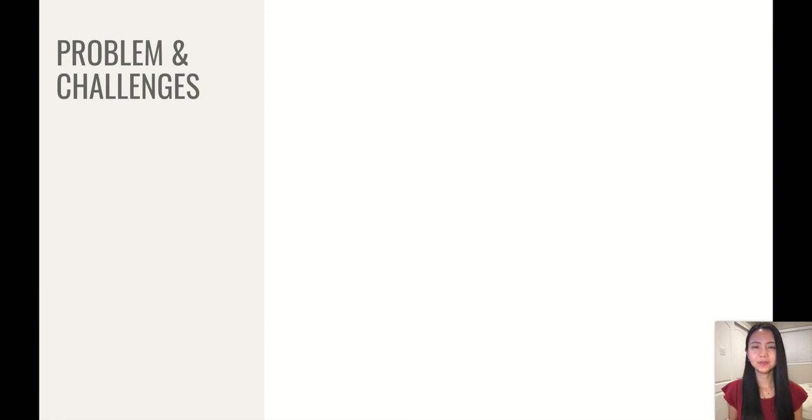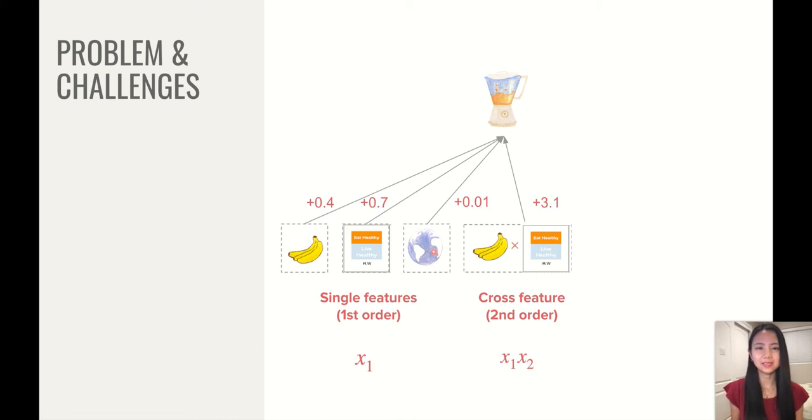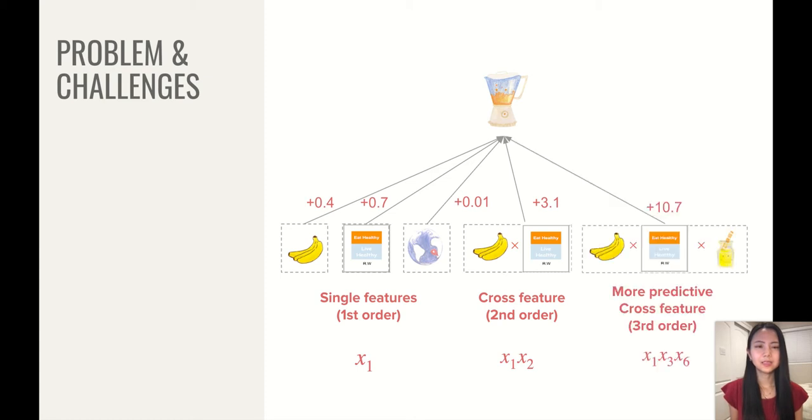So let's first look at the motivations. Assume that you are going to sell a blender to a customer and then all the customers past purchase histories. For example, whether she or he has purchased bananas or has read cooking books or single features and they are first order. And when two purchasing events happen at the same time, there is a higher likelihood for this customer to click on your ad. And this is the cross feature, which is of second order. And you can see that we could potentially have more predictive cross features if we go even higher orders.